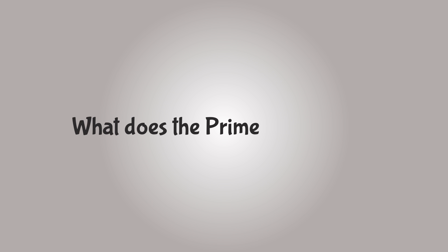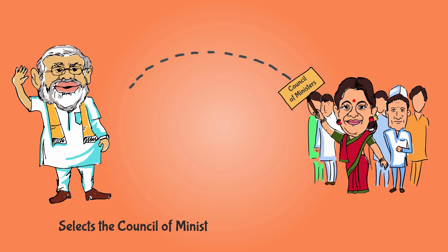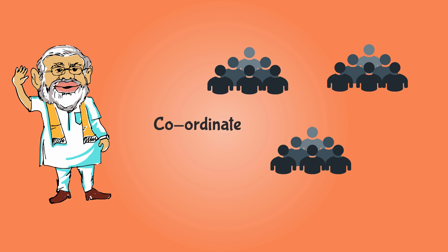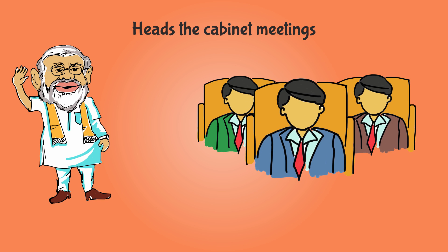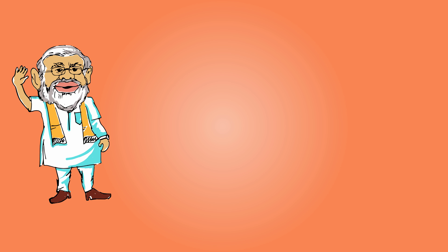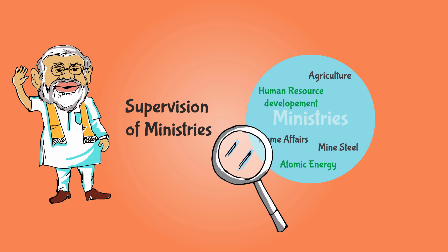So what does the Prime Minister do? The Prime Minister selects the Council of Ministers for the working of the government. He coordinates the work of the different departments, heads the cabinet meetings, and takes the final decision in case of disagreement between the departments. He exercises general supervision of different ministries.